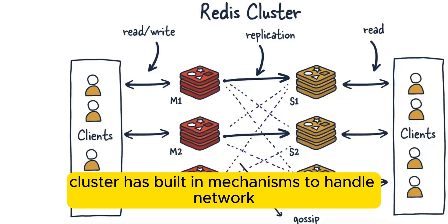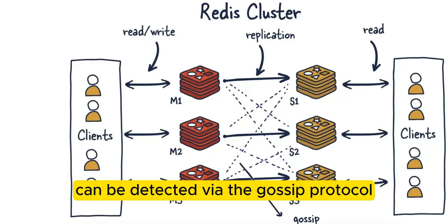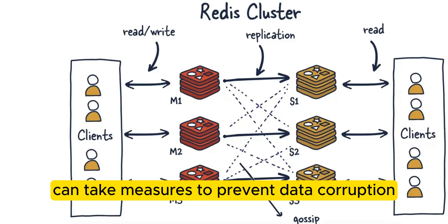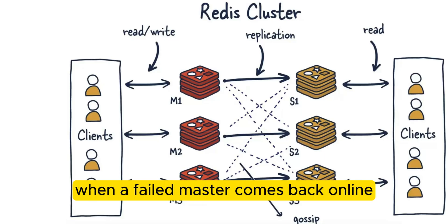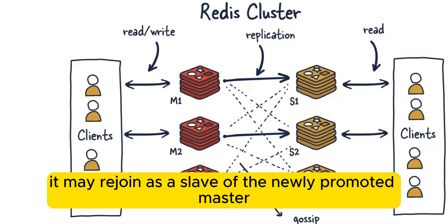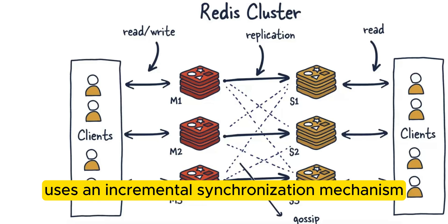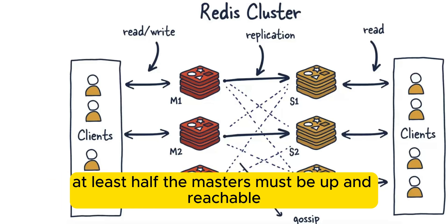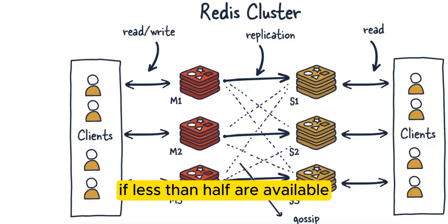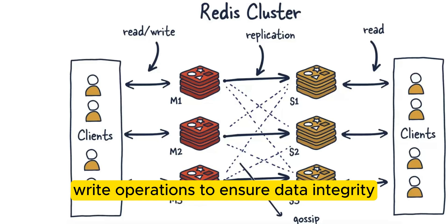Redis cluster has built-in mechanisms to handle network partitions, or split-brain. Nodes that become isolated can be detected via the gossip protocol, and Redis can take measures to prevent data corruption or inconsistency by disabling unreachable nodes. When a failed master comes back online, it may rejoin as a slave of the newly promoted master. The cluster uses an incremental synchronization mechanism to bring it up to date. For the cluster to remain operational during failures, at least half the masters must be up and reachable. If less than half are available, Redis cluster will stop accepting write operations to ensure data integrity.